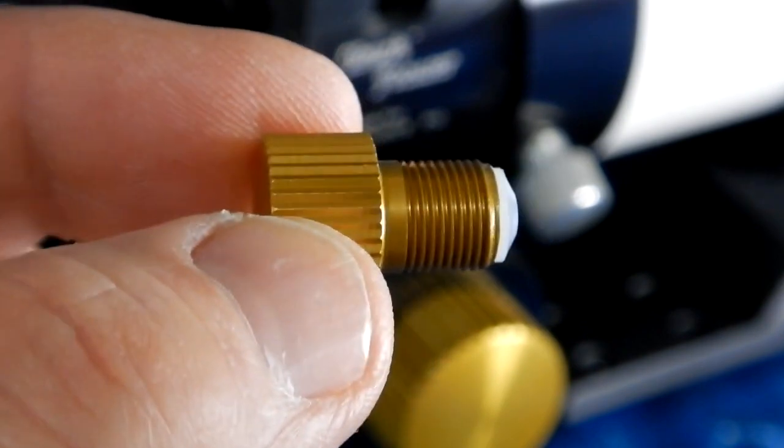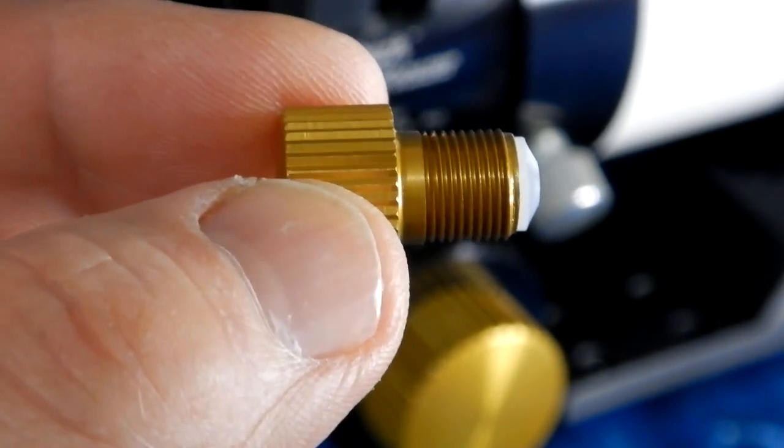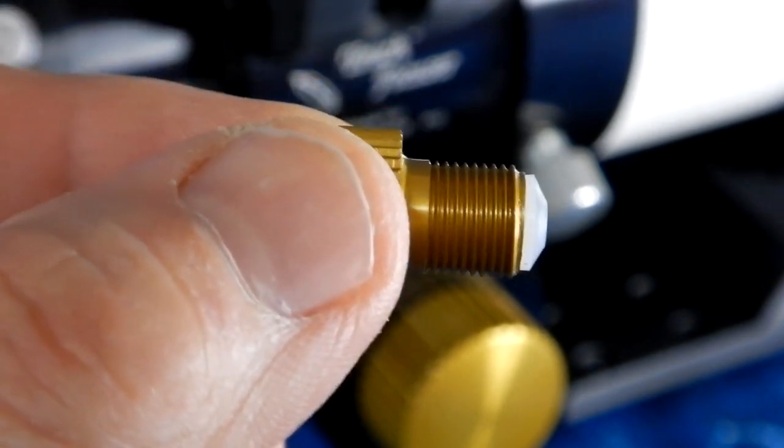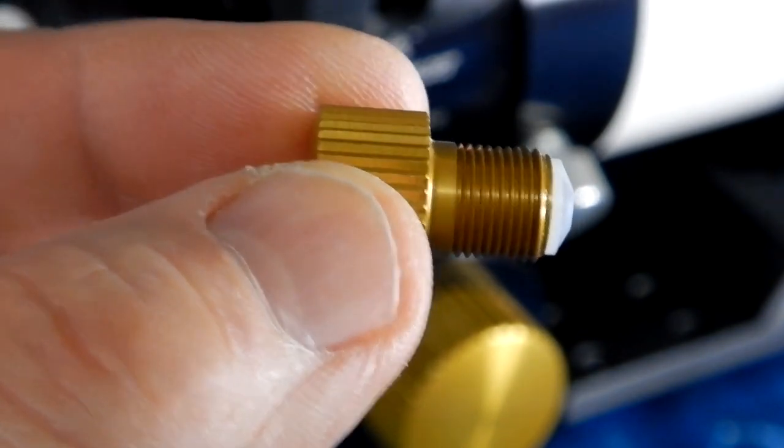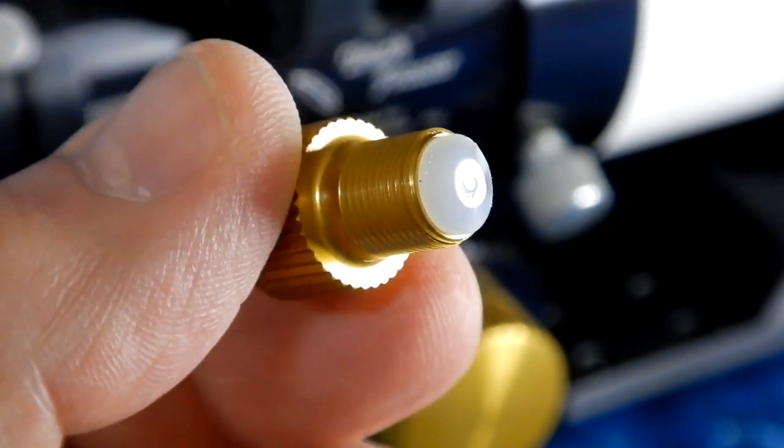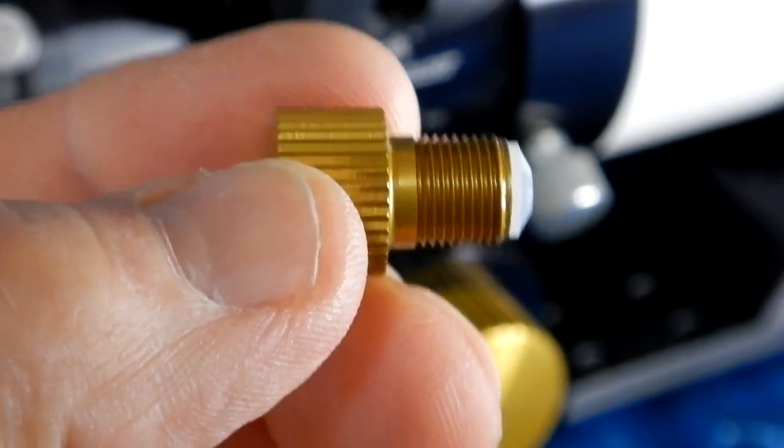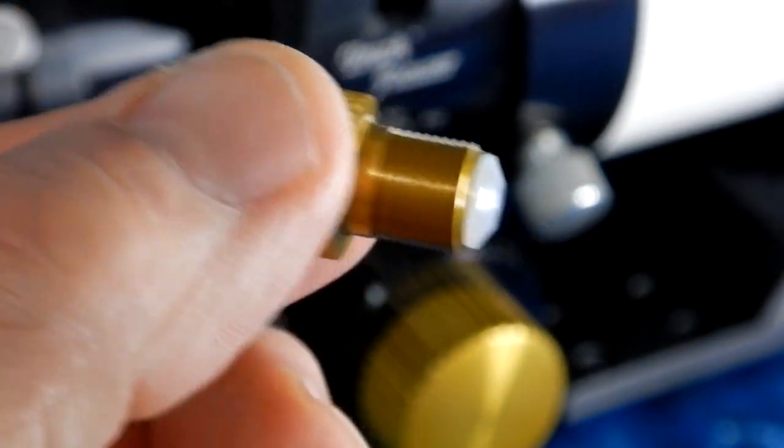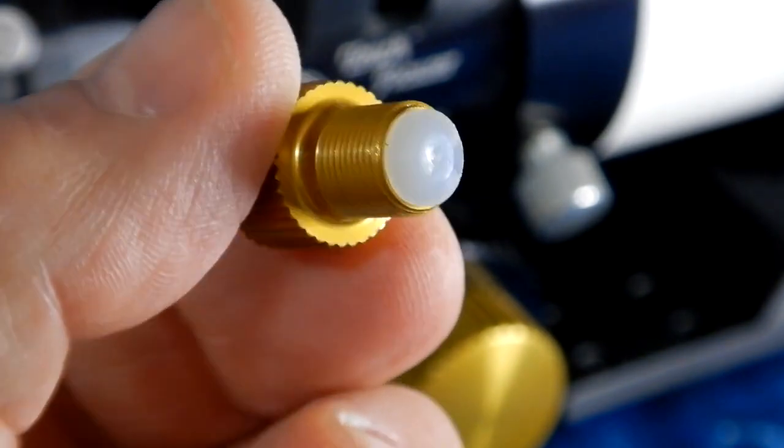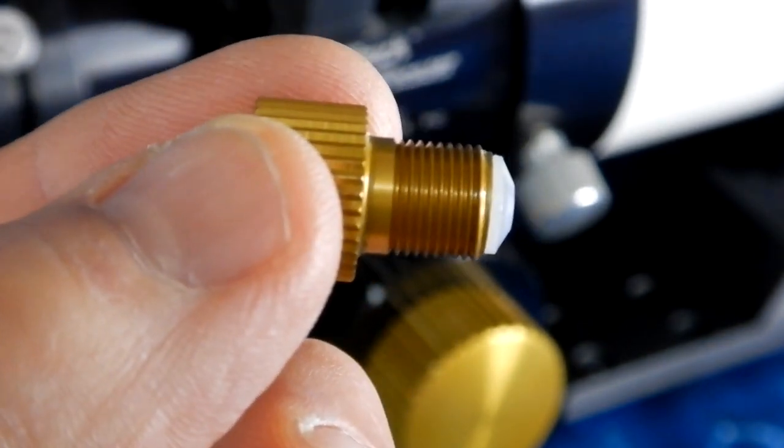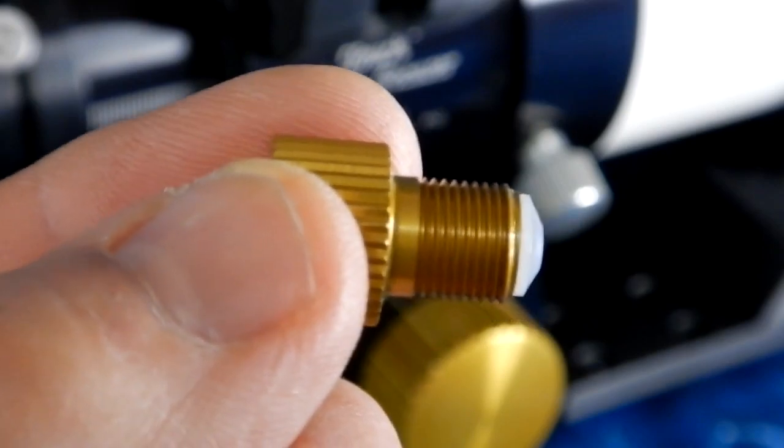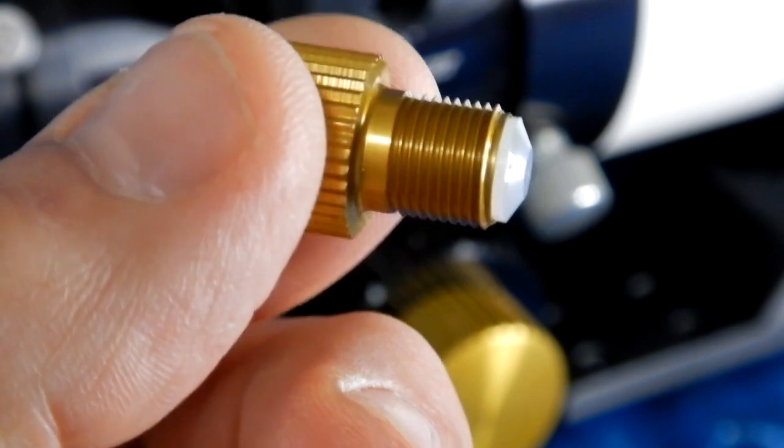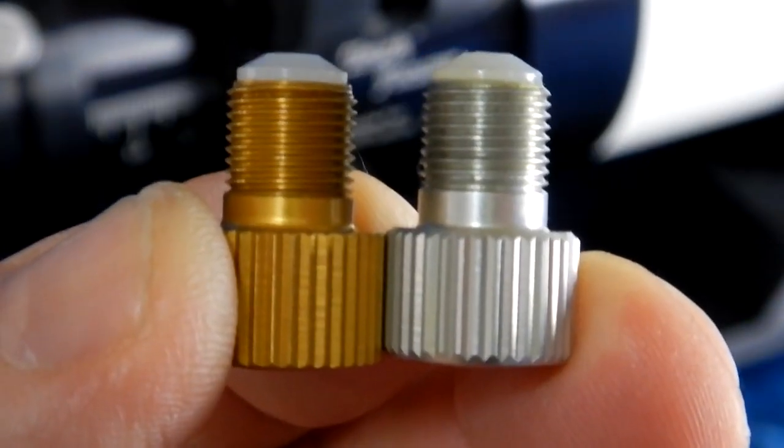The gentleman I spoke to said he did have to verify that for the focuser they provide with the 92 millimeter, they also provide the tube adapter. He explained that Astrophysics will buy their focusers but then make their own tube adapters to attach the Feather Touch to their own tube assemblies. But since in this particular case for the 92, they do provide not only the focuser but the actual tube adapter, we were able to get this.